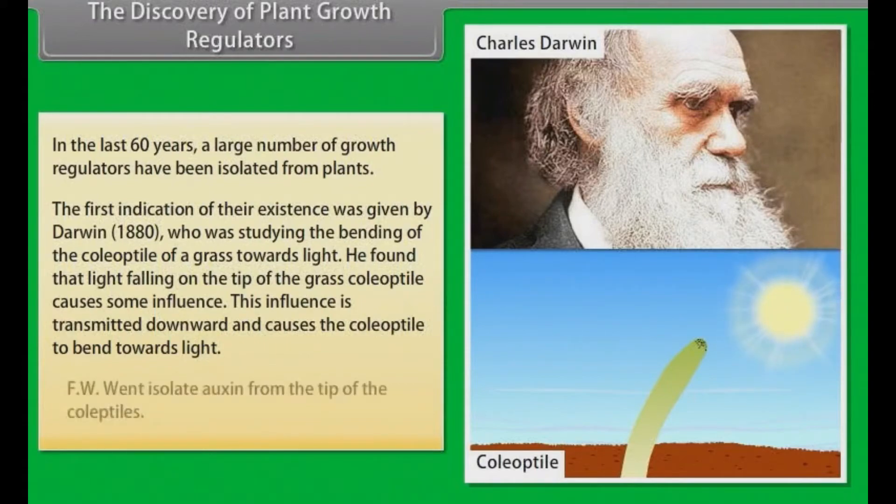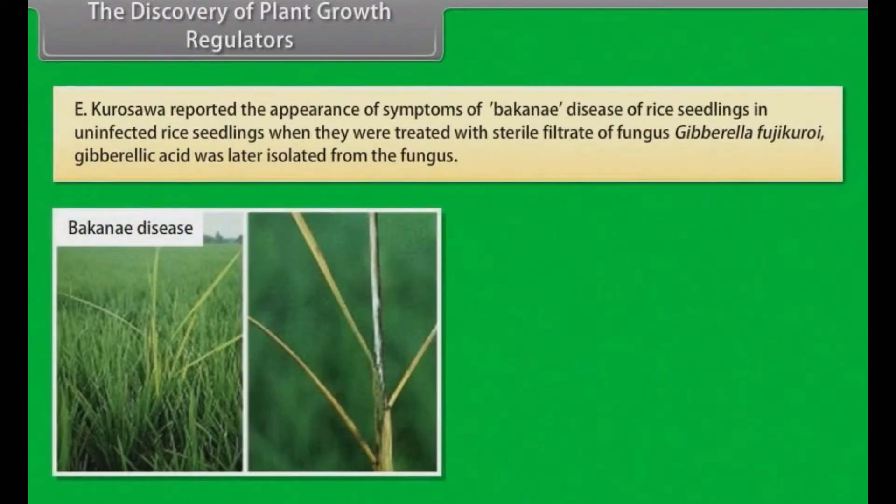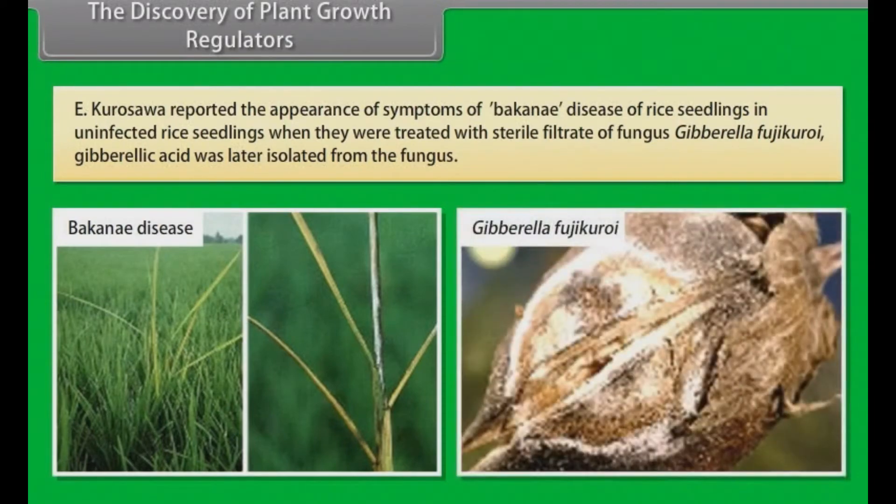F.W. Went isolated auxin from the tip of the coleoptiles. E. Kurosawa reported the appearance of symptoms of bakanae disease of rice seedlings in uninfected rice seedlings when they were treated with sterile filtrate of fungus Gibberella fujikuroi. Gibberellic acid was later isolated from the fungus.